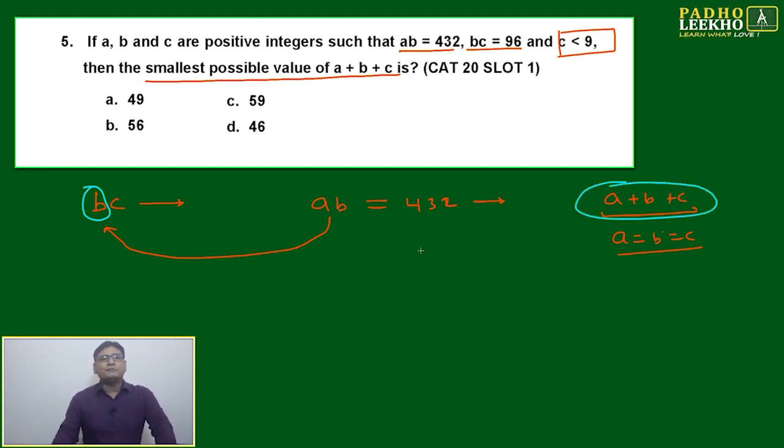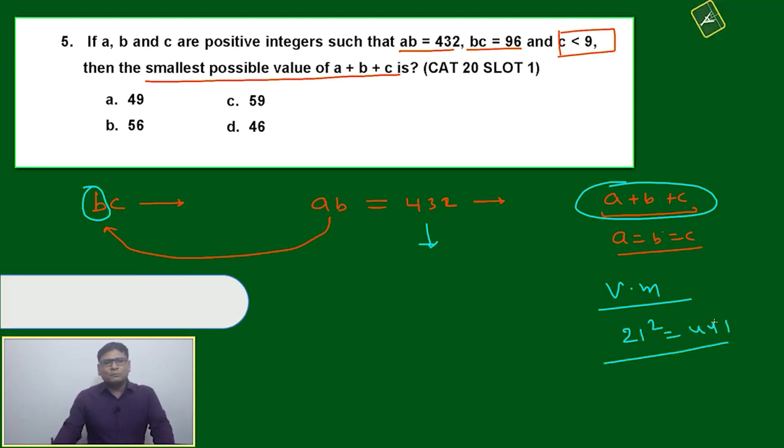432, how will we check? We'll use Vedic math. Multiple times Vedic math will apply—approximate a square number. How much will it be? 21 square is 441, am I right?